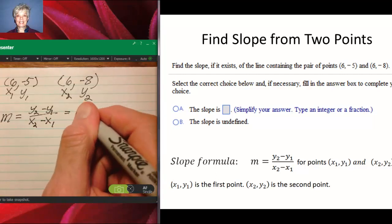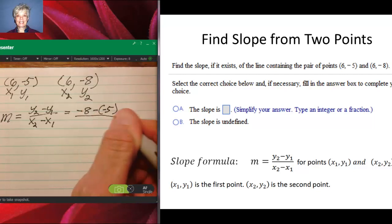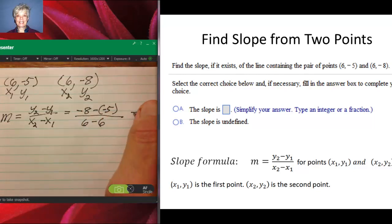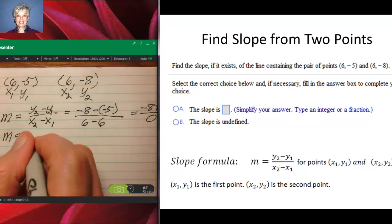We will have -8 minus -5 over 6 minus 6, which will be -8 plus 5 over 0. Now at this point, it really doesn't matter what -8 plus 5 is—it's -3—but you have a fraction with a 0 on the bottom. It's not real, it's undefined, it's weird. That means you have a vertical line.